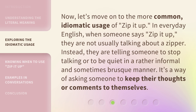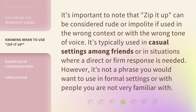Now, let's move on to the more common idiomatic usage of "zip it up." In everyday English, when someone says "zip it up," they are not usually talking about a zipper. Instead, they are telling someone to stop talking or to be quiet in a rather informal and sometimes brusque manner. It's a way of asking someone to keep their thoughts or comments to themselves. It's important to note that "zip it up" can be considered rude or impolite if used in the wrong context or with the wrong tone of voice. It's typically used in casual settings among friends or in situations where a direct or firm response is needed. However, it's not a phrase you would want to use in formal settings or with people you are not very familiar with.